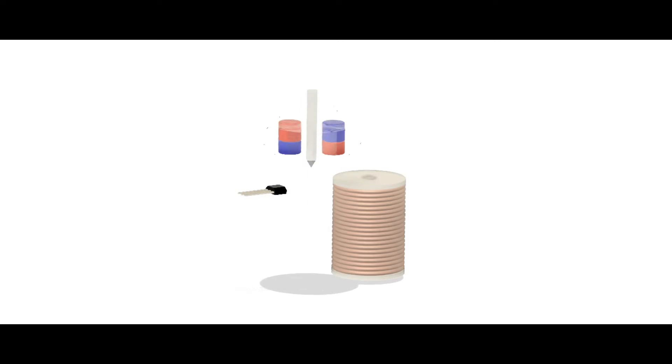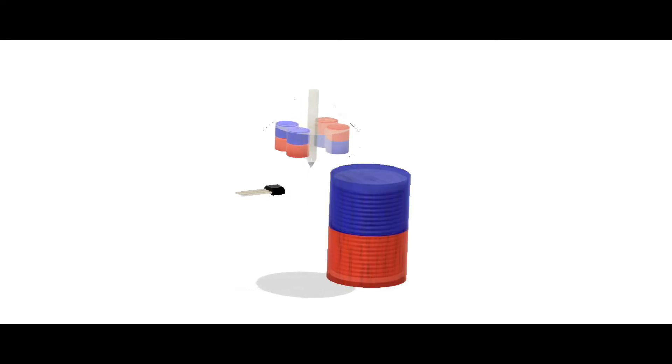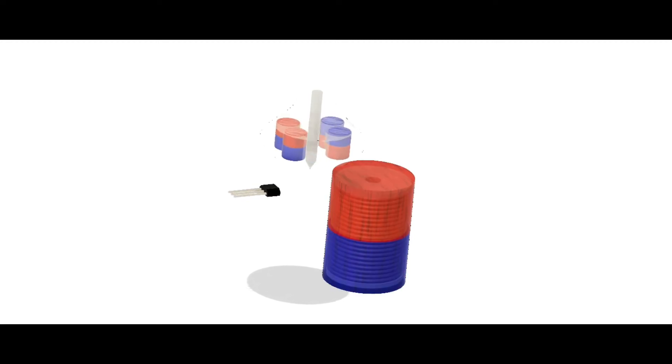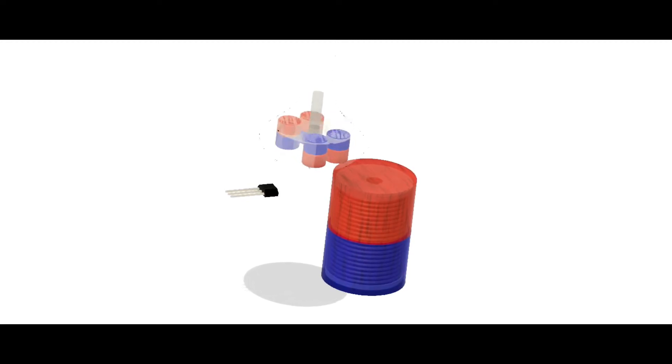The spinning top contains permanent magnets. Inside the base there is a Hall effect sensor and an electromagnetic coil. The sensor detects the polarity of the magnetic field from the spinning top and triggers the opposite polarity to the electromagnet.